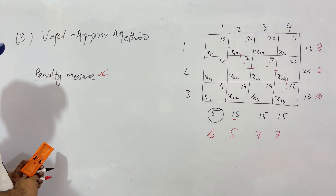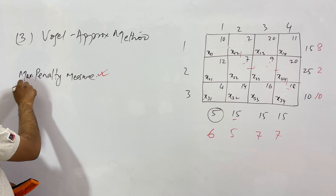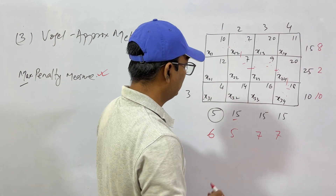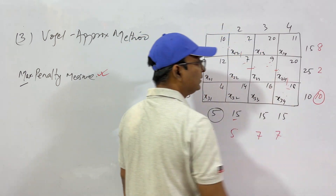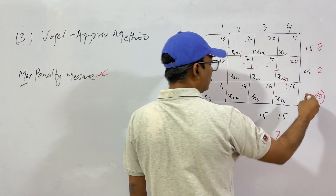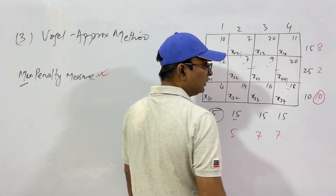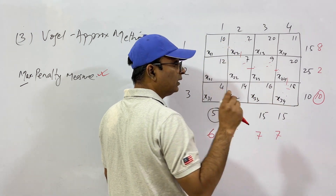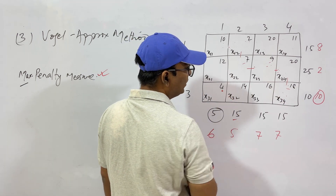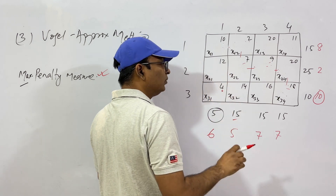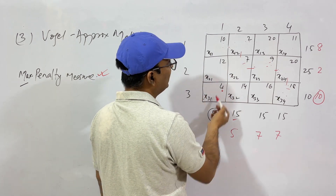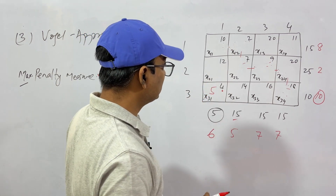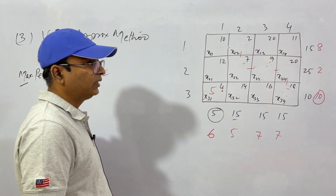Which is the maximum penalty measure? Out of 6, 5, 7, 7, 8, 2, 10 — the maximum is 10, which belongs to row 3. So we select the row with maximum penalty, find the cell with lowest per unit cost in that row — which is cost 4 — and allocate maximum demand. The demand for that column is 5, so we allocate 5.